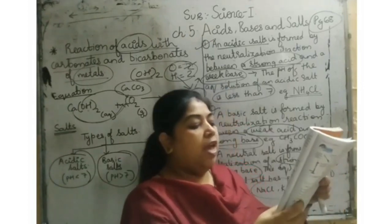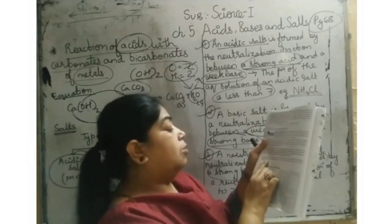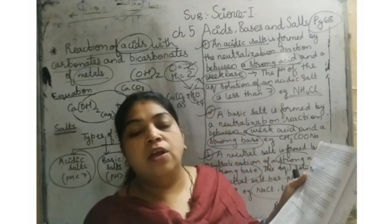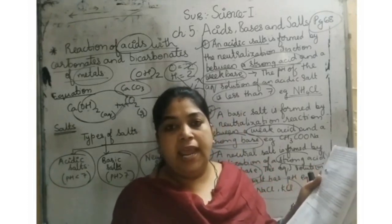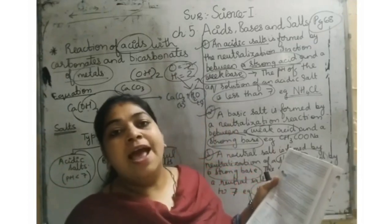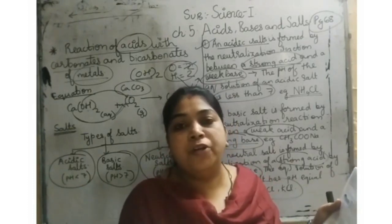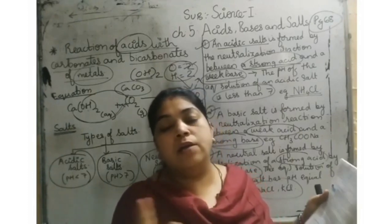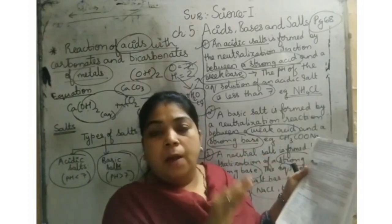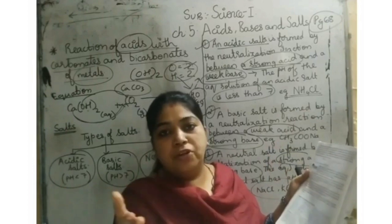Now, here is a small activity for you all: classify the following salts into three types — acidic, basic, and neutral. The salts are: sodium sulfate, potassium chloride, ammonium nitrate, sodium carbonate, sodium acetate, and sodium chloride. Take a paper, make three columns — acidic salts, basic salts, and neutral salts — and classify them. Submit your answers on Virtual ED by Monday, not in the comment section.